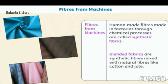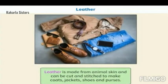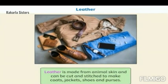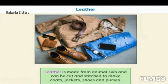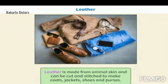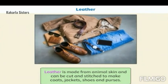Blended fabrics are synthetic fibers mixed with natural fibers like cotton and jute. Leather is made from animal skin and can be cut and stitched to make coats, jackets, shoes and purses.